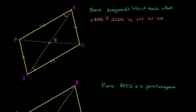That's by alternate interior angles of a transversal intersecting parallel lines. Now if we look at diagonal AC — or we should call it transversal AC — we can make the same argument. It intersects here and here, and these two lines are parallel. So alternate interior angles must be congruent. Angle DEC must be congruent to angle BAE for the exact same reason.